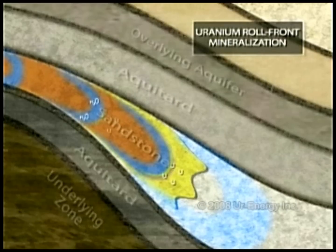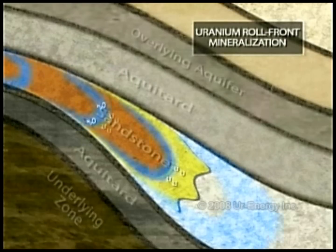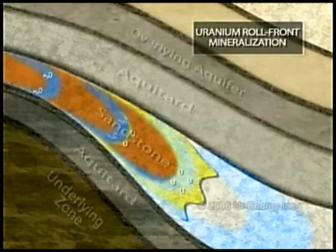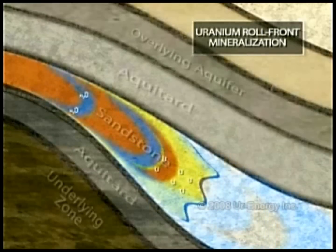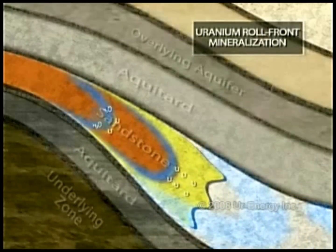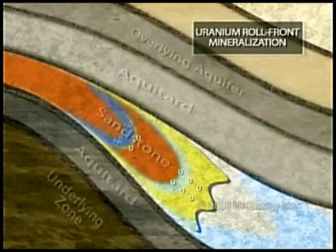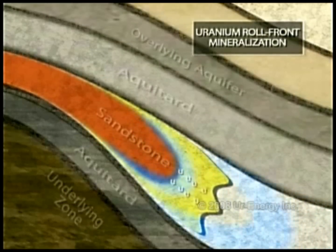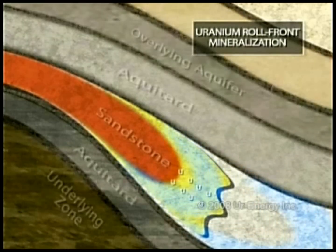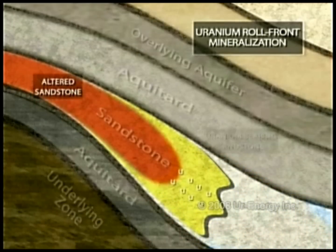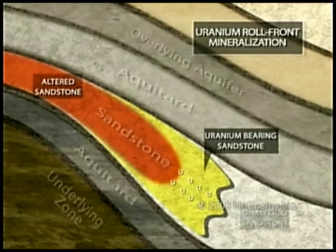The reduced uranium precipitates out in the sandstone. The contact between the reduced and oxidized sandstone is commonly referred to as a roll-front. The roll-front continues to move down-dip as the groundwater continues to deliver additional oxygen, and it re-oxidizes and dissolves previously precipitated uranium, and then re-precipitates the uranium when the oxygen is exhausted. Geologists refer to the oxidized sandstone as altered sandstone, uranium-bearing sandstone at the roll-front, and the original reduced sandstone as unaltered sandstone.